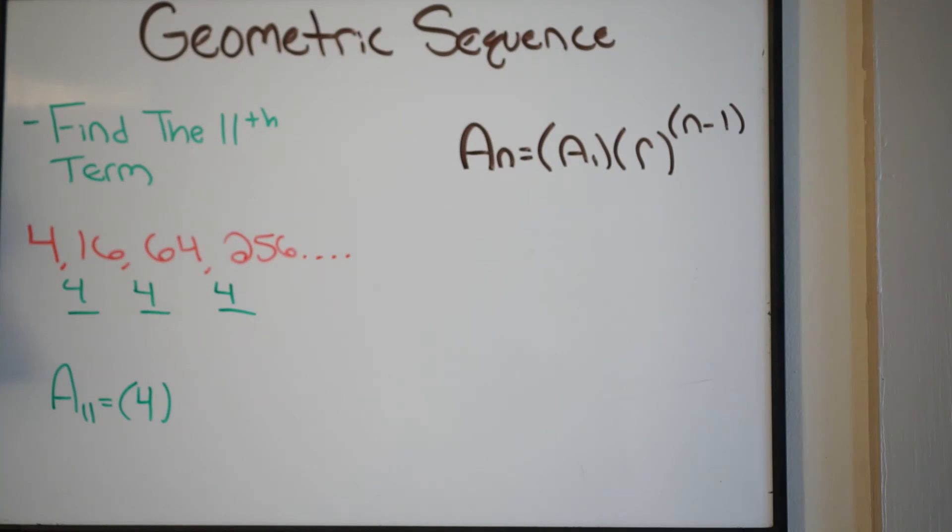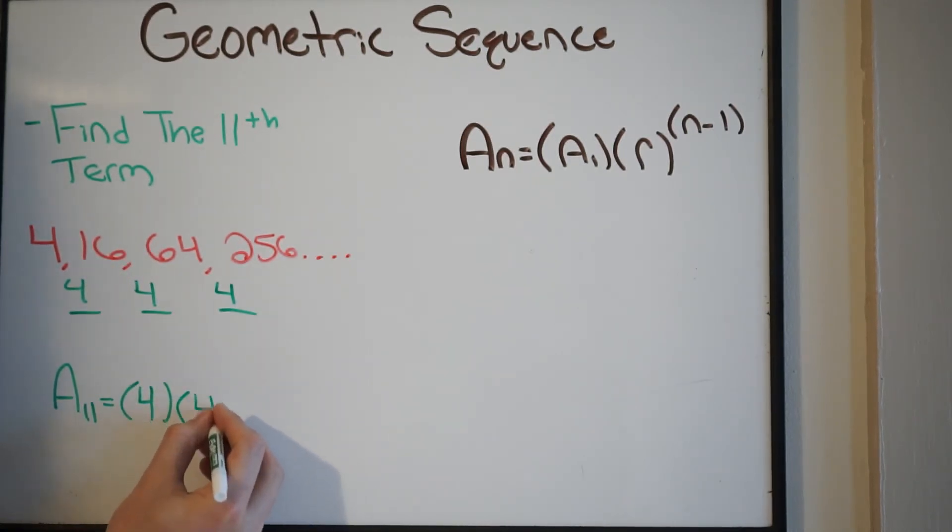Our common ratio, well, that's what we just found. We determined it's going to be 4. N represents the number of the term in the sequence. In this case, again, we're trying to find the 11th term. So we're going to plug in 11 there, 11, and then minus 1.